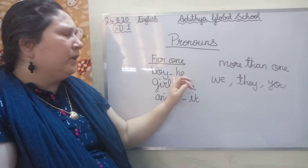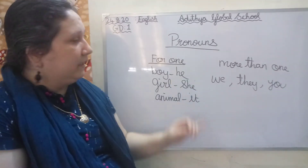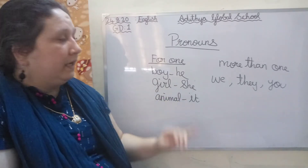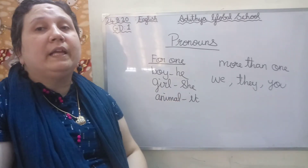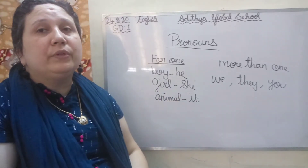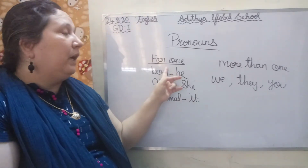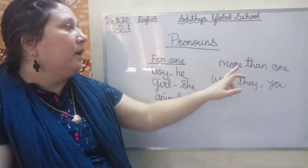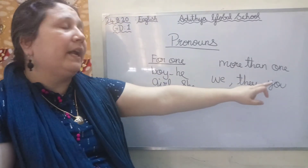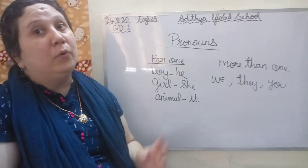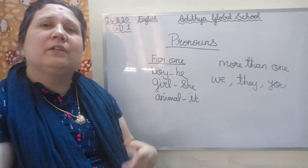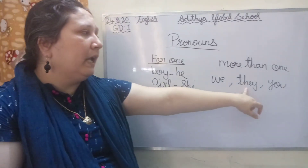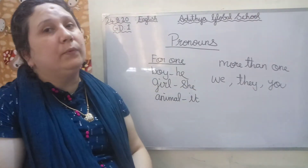So for a boy what do we use? Excellent — he. For a girl, she. For an animal or things we use it, when we talk about a single person or object. But when there are more than one — lots of people, lots of things — so what do we use? We, they, or you.